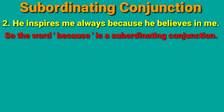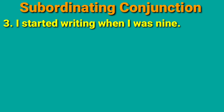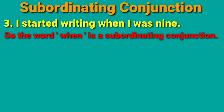Third example: I started writing when I was nine. In this example, there are two sentences. The first is 'I started writing' and the second is 'I was nine.' In between the two sentences, there is a connecting word. So, the word 'when' is a subordinating conjunction.